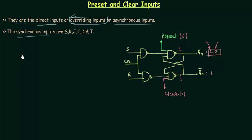So let me write this down. Preset equals 0 implies that QN is equal to 1. I just explained it here. And when clear is equal to 0, QN becomes 0 because QN complement is 1 in that case.